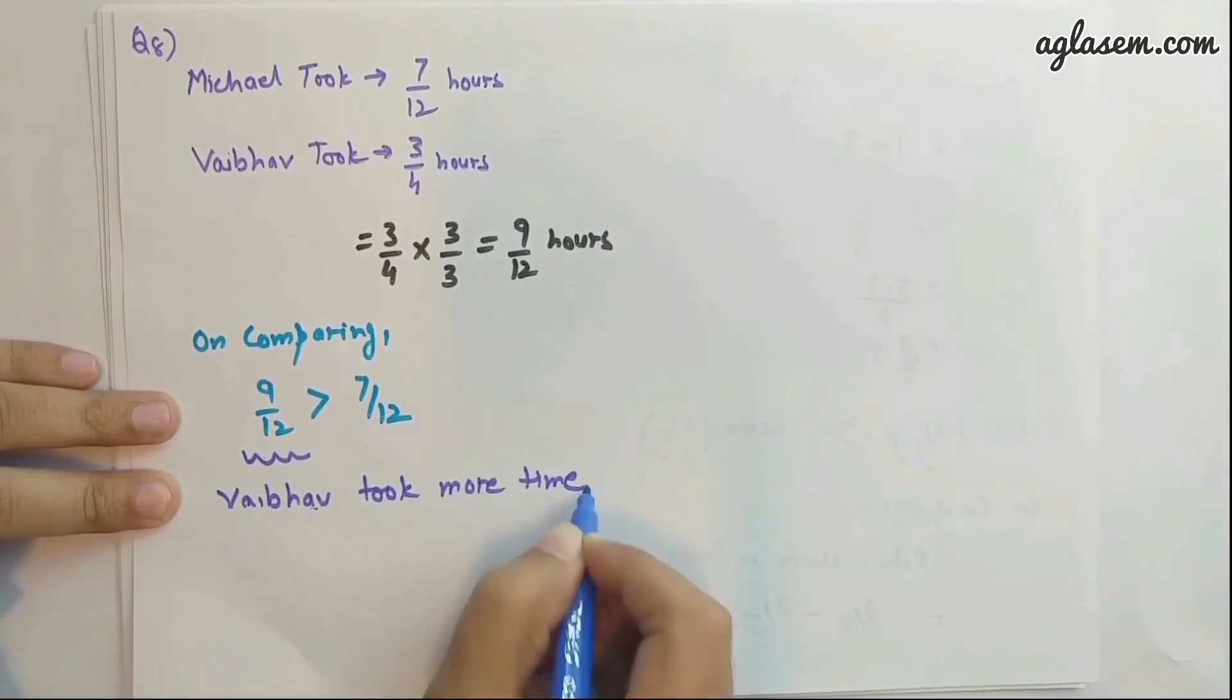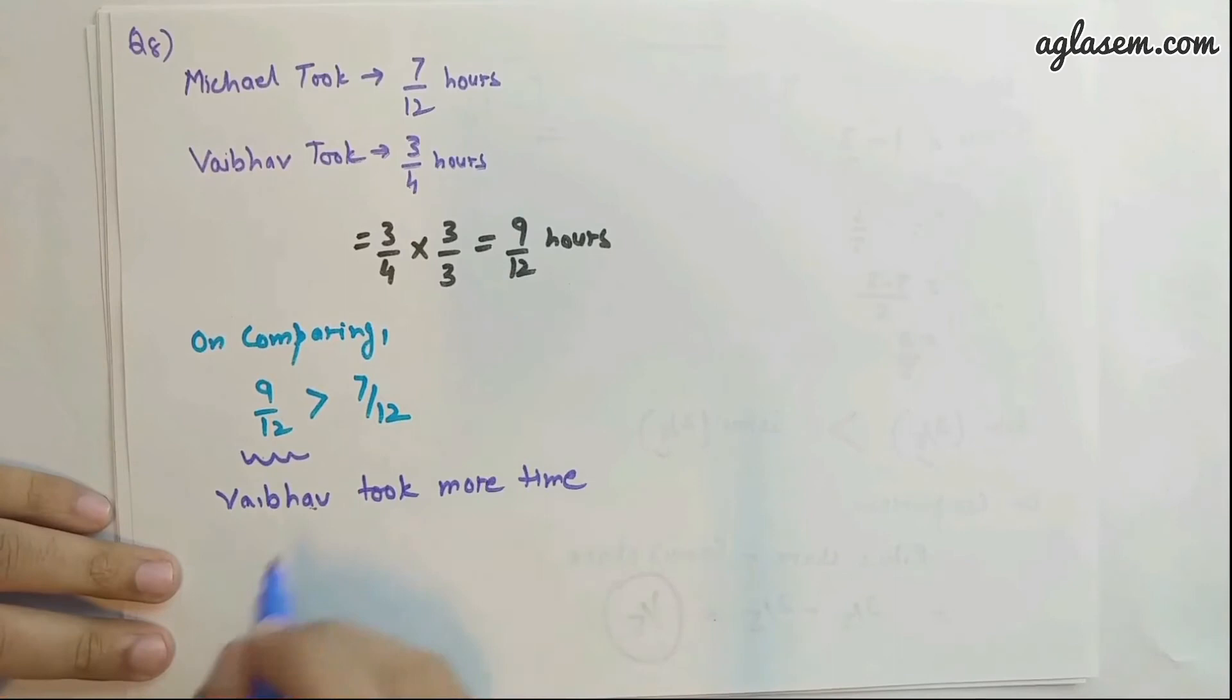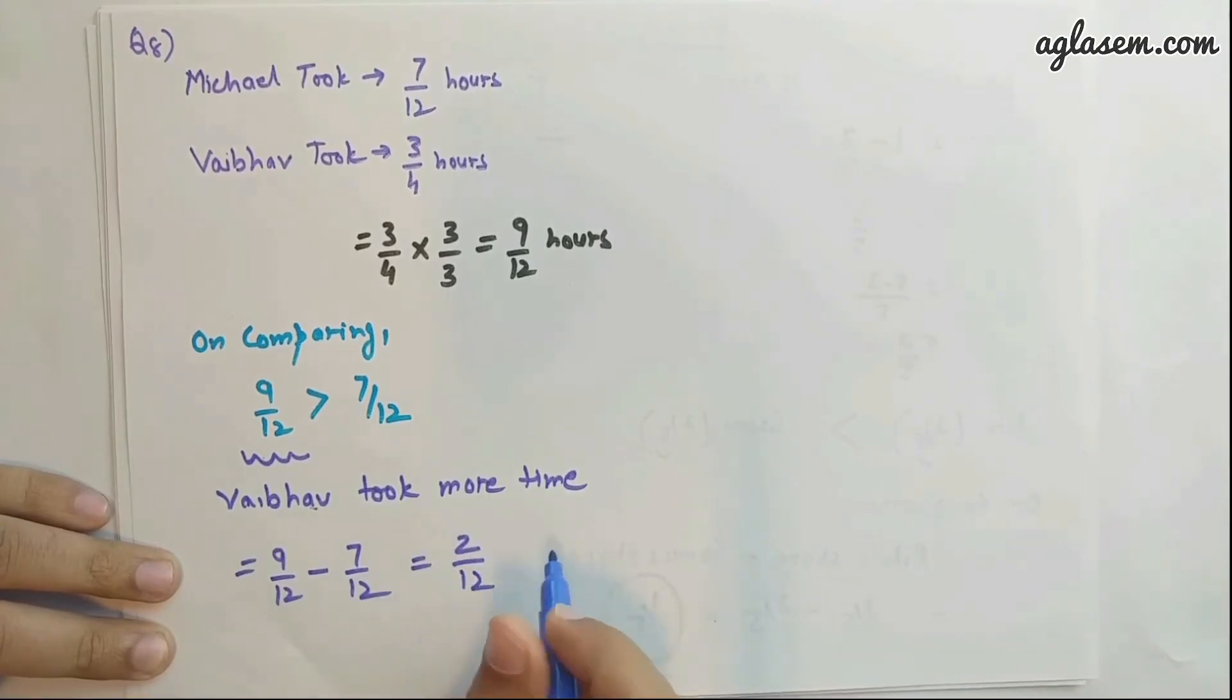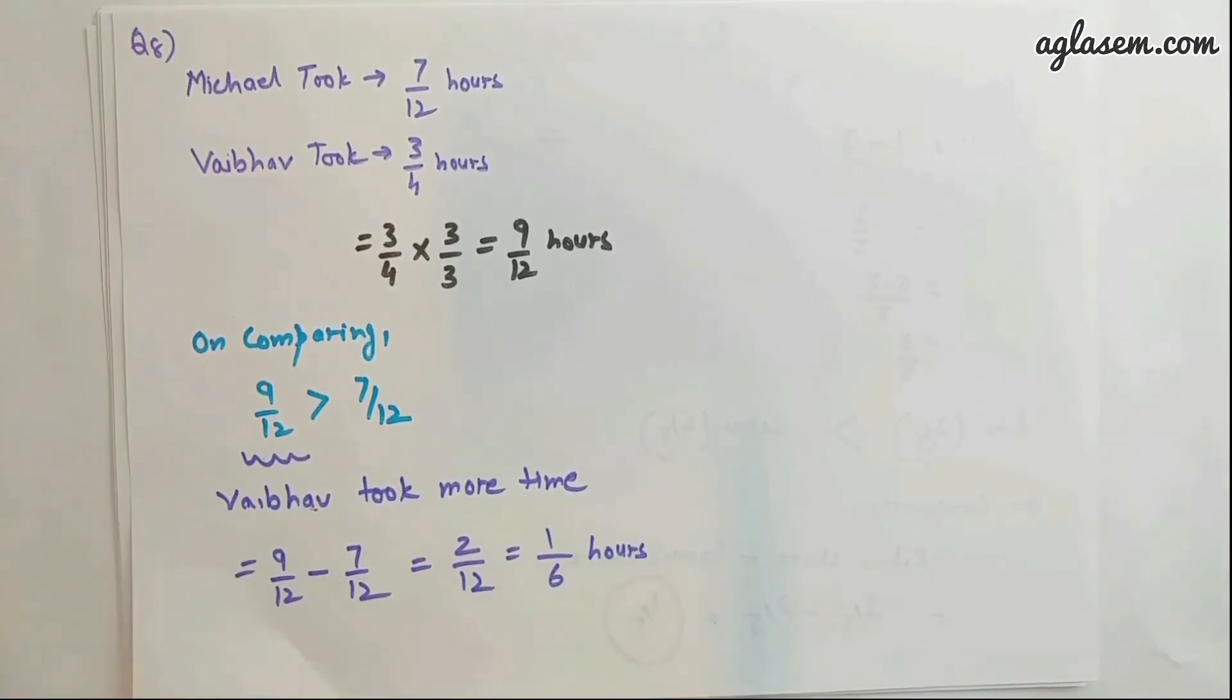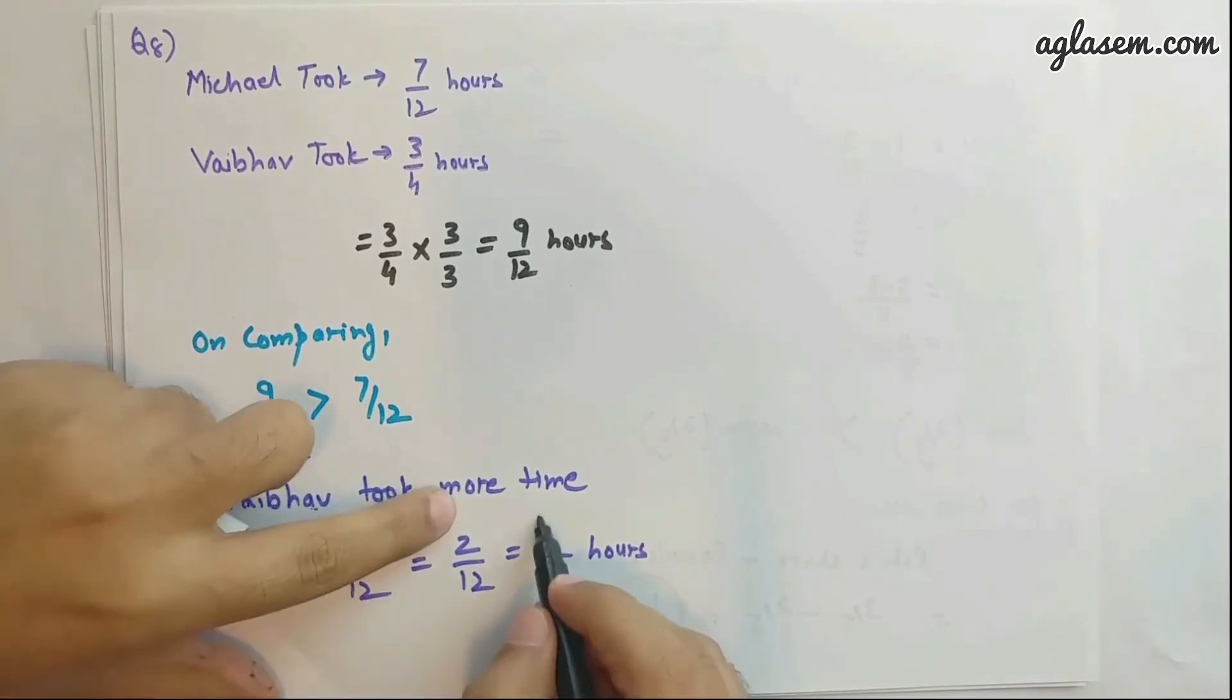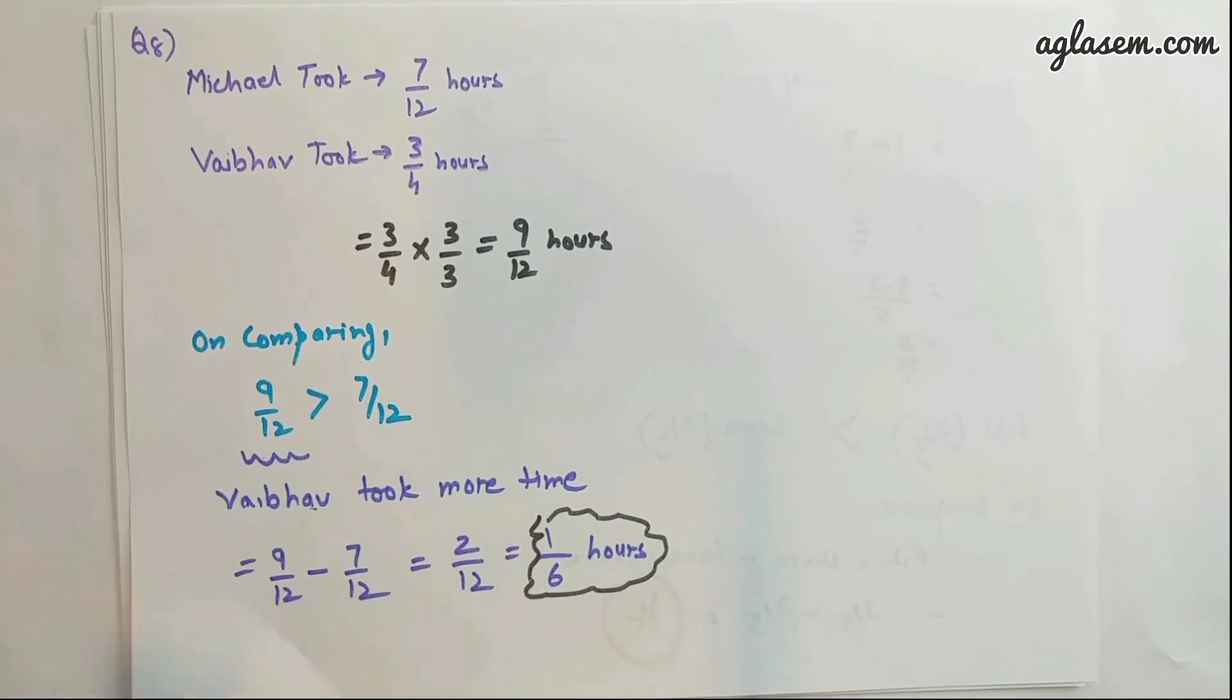But by how much? For that you will subtract both numbers and arrive at 2/12, that is 1/6 hours. So Vaibhav took 1/6 hours extra. You can write 1/6 hours.